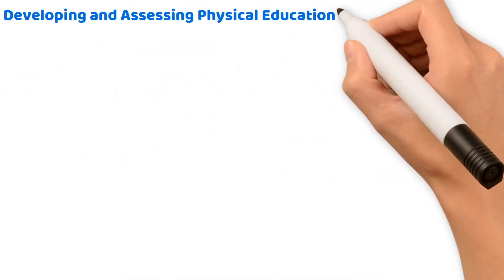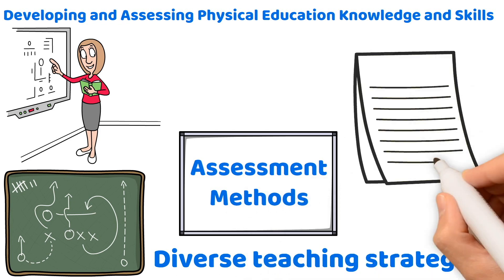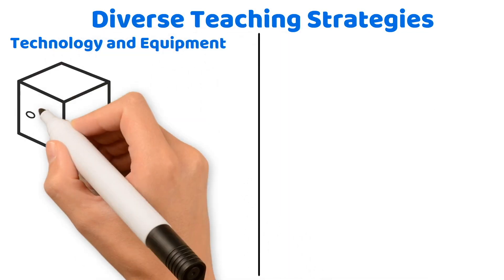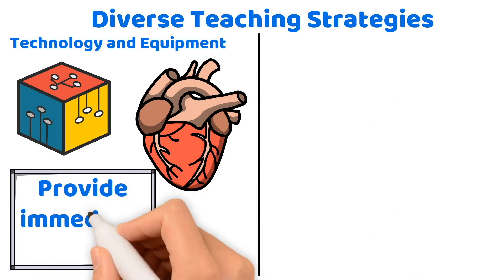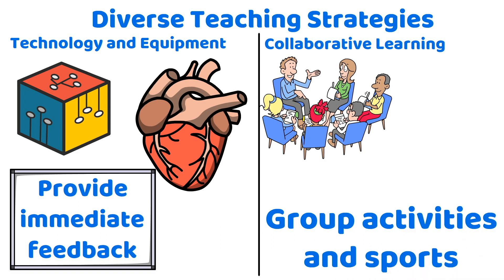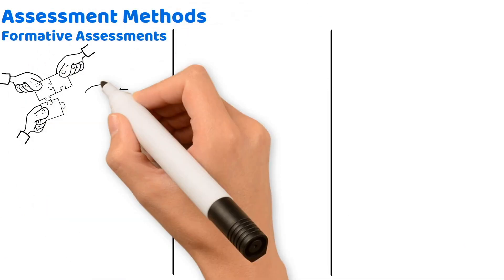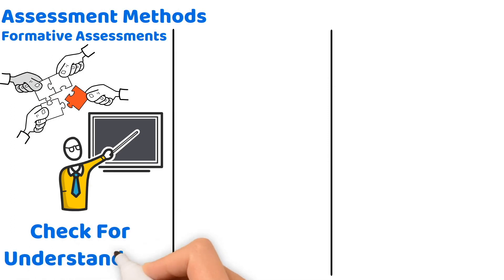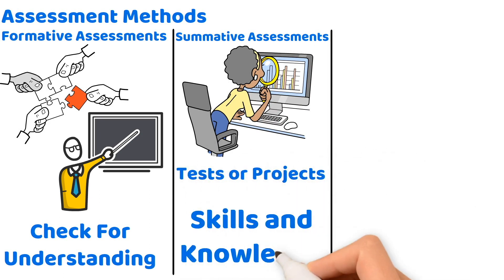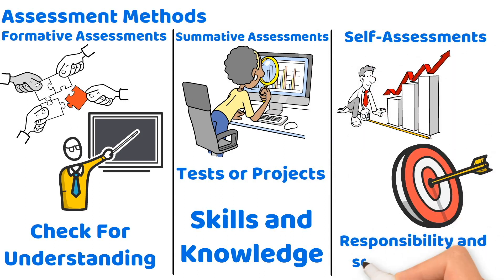Developing and assessing physical education knowledge and skills requires a strategic approach combining diverse teaching strategies, assessment methods, and resources. Incorporate fitness apps and heart rate monitors to enhance learning and provide immediate feedback. Foster teamwork and social skills through group activities and sports. Use formative assessments such as quizzes and practical demonstrations regularly to check for understanding, and evaluate learning at the end of a unit through summative tests or projects. Encourage students to assess their own progress and set personal goals, fostering a sense of responsibility and self-awareness.